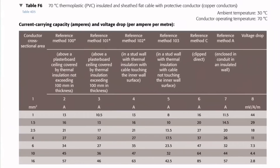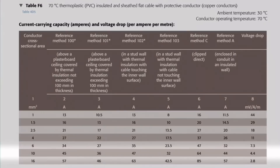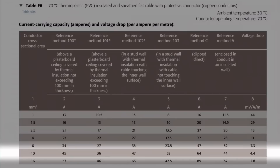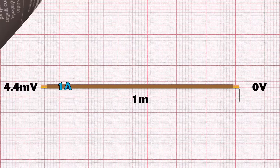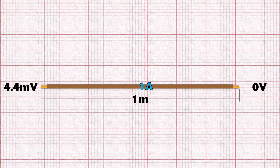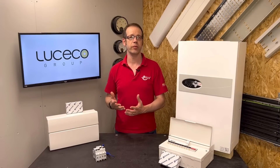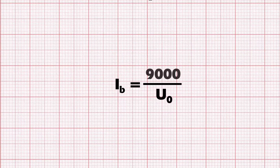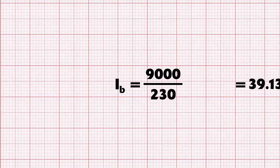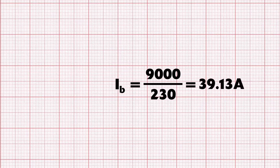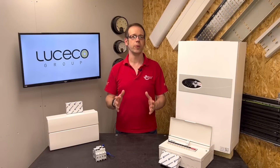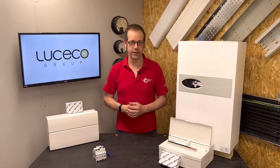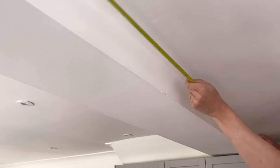Looking at the cable we selected — 10mm² — we find a value in column 8 of 4.4 millivolts per amp per metre. But our circuit is longer than one metre and drawing much more than one amp, so we use the real-world values of current and length for our circuit. The current is the design current of the circuit, which we calculated in video 2 of part 1 of this series — that came out at 39.13 amps. The length of the circuit is really important for this stage of the process, and you can find it by measuring the real-world route with a tape measure, which is generally the preferred method when adding a circuit to an existing installation.